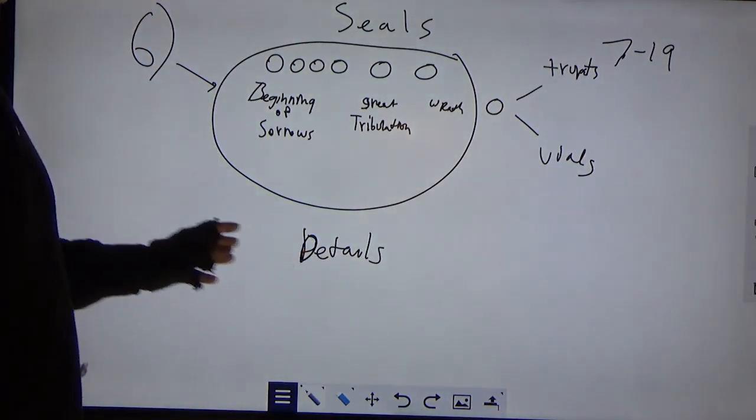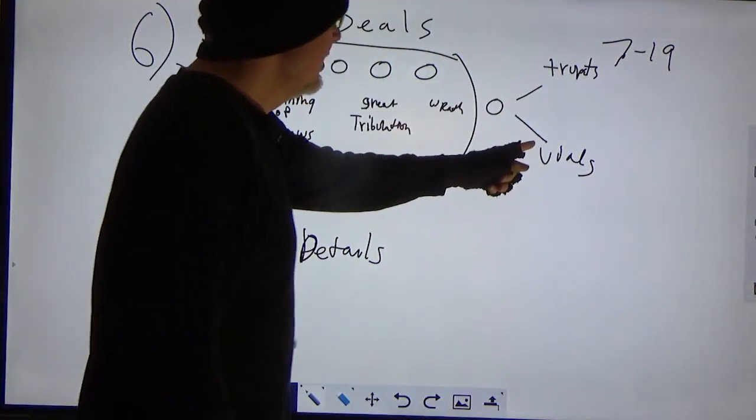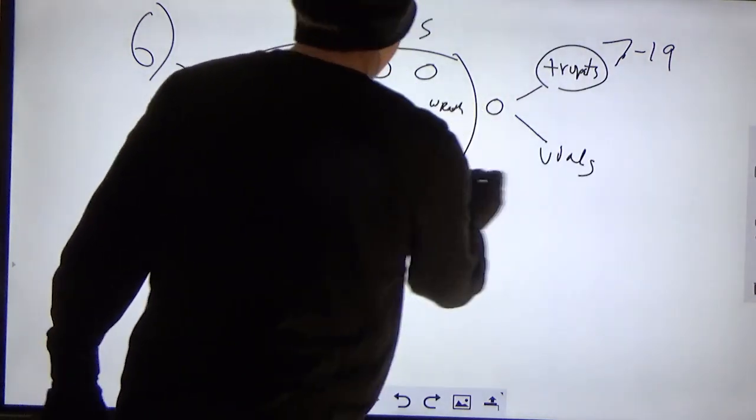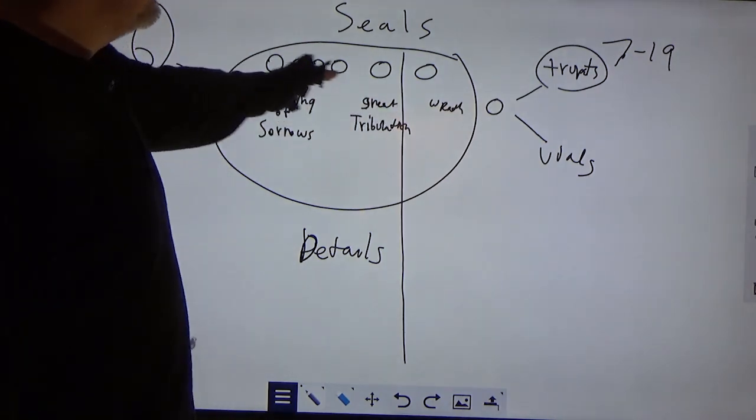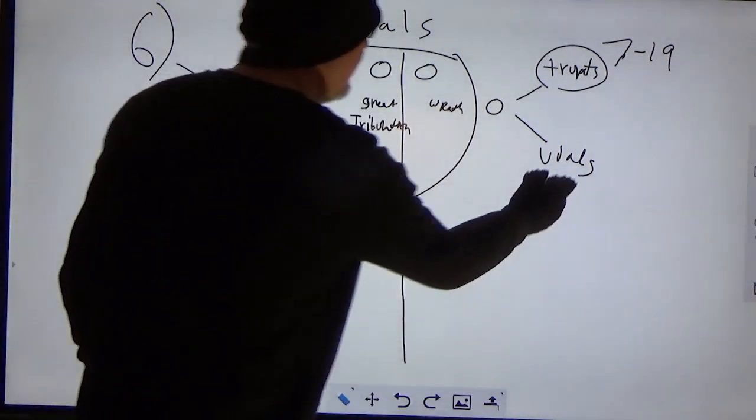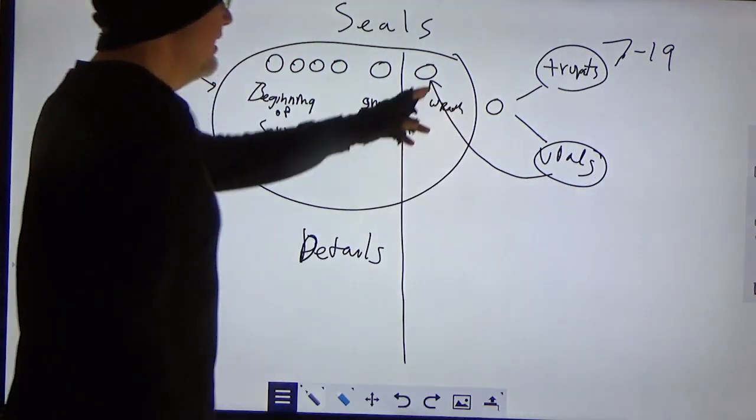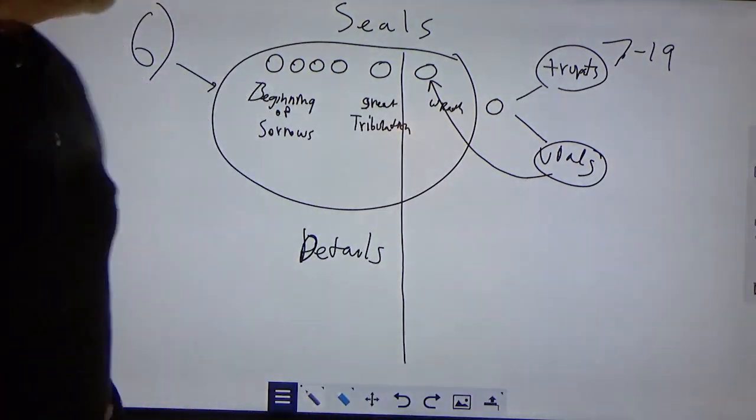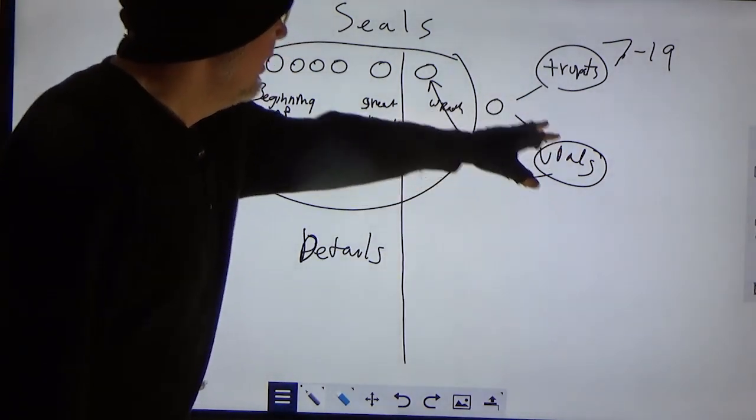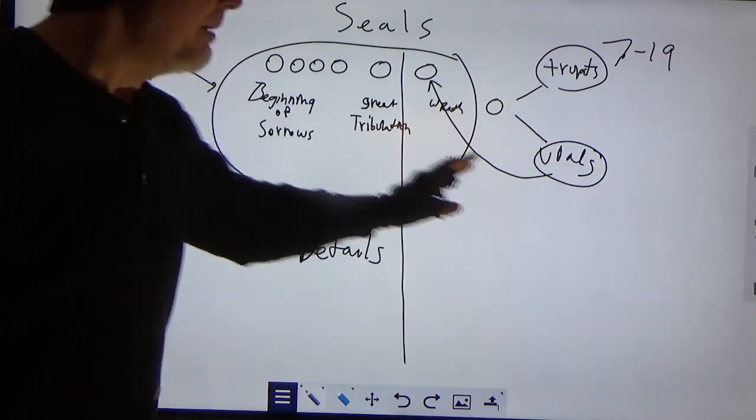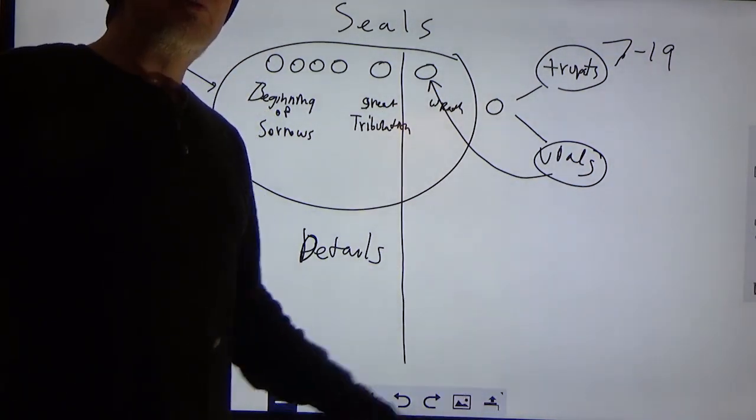And in this seal is the trumpets and the vials, and the trumpets of tribulation happen before the great tribulation point is over, and the beginning of sorrows all the way up to great tribulation, and the vials of wrath happens obviously only to the wicked in the sixth seal. Now, this is the overlay of time on top of time, it's not an extension of time. In fact, this isn't even about time, it has nothing to do with more time, it has to do with more information.